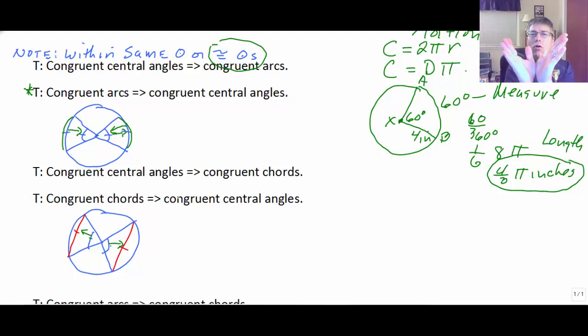A shorter angle, a shorter chord. Well, if the circles are congruent or the same circle, that's going to make sense that congruent central angles are going to cut congruent chords.